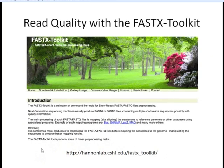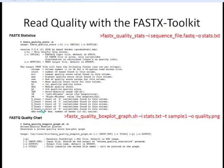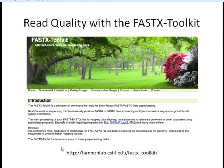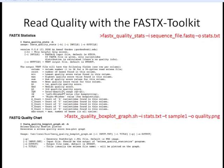We can check quality using a program called the FASTX Toolkit. This program has scripts to check the quality and to do subsequent trimming if necessary, based on what the quality plots look like. It's available for download at the provided website. Today we'll talk about using it to look at the quality of our reads within the library.